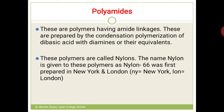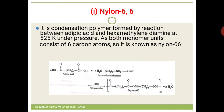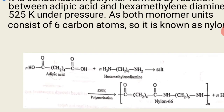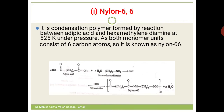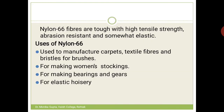The chain continues on both sides. You get C double bond O, -(CH₂)₄-, C double bond O. Water is eliminated from here, giving -NH-, -(CH₂)₆-, -NH- with the chain continuing on both sides. This polymer is nylon 6-6.